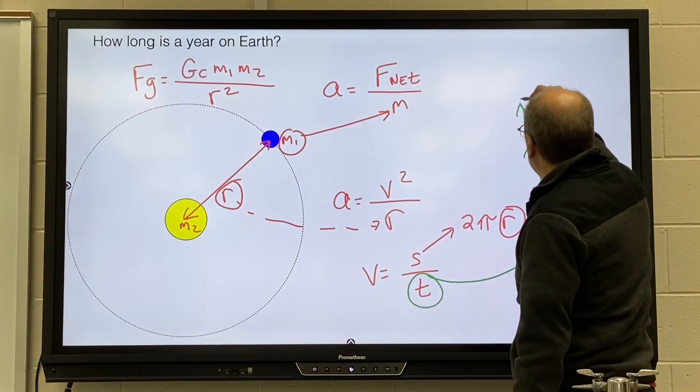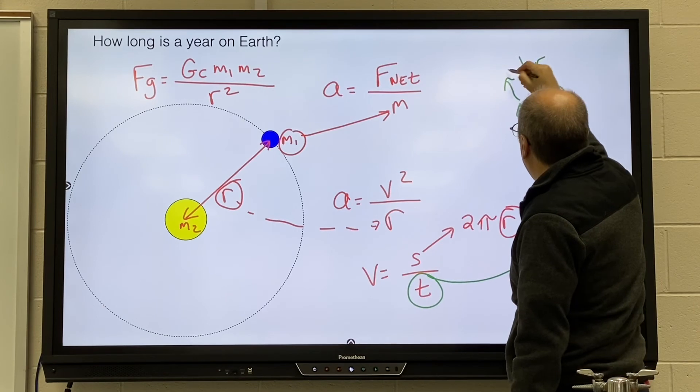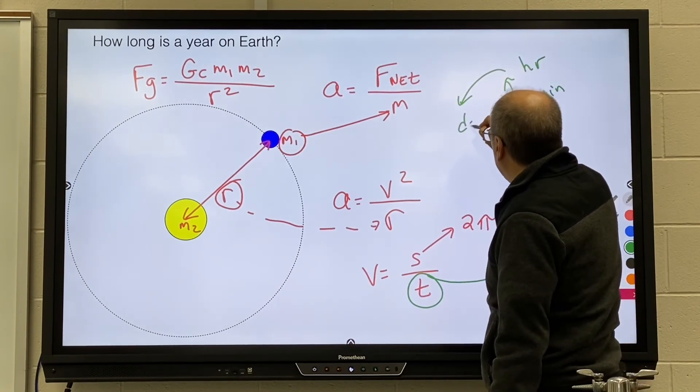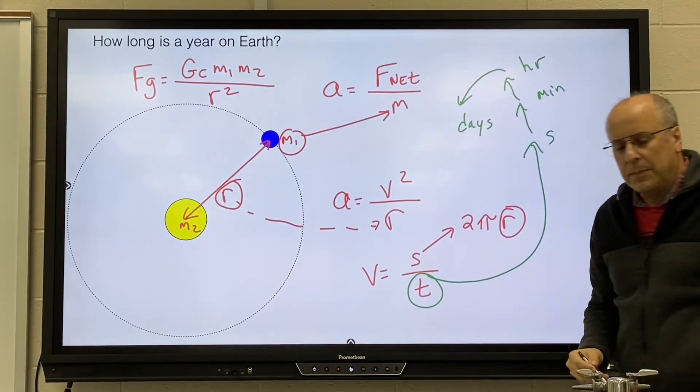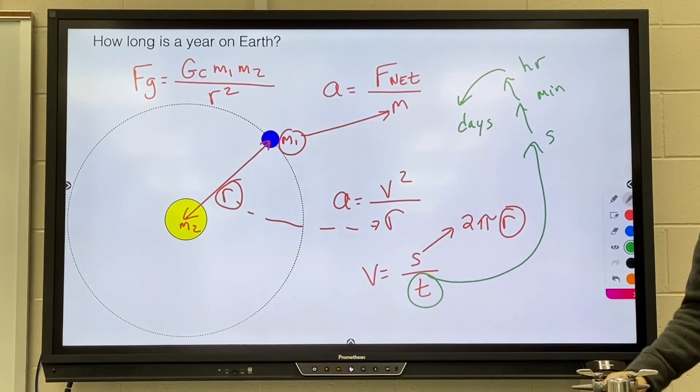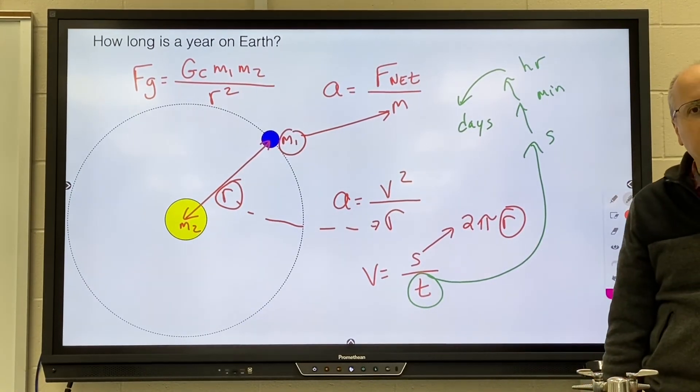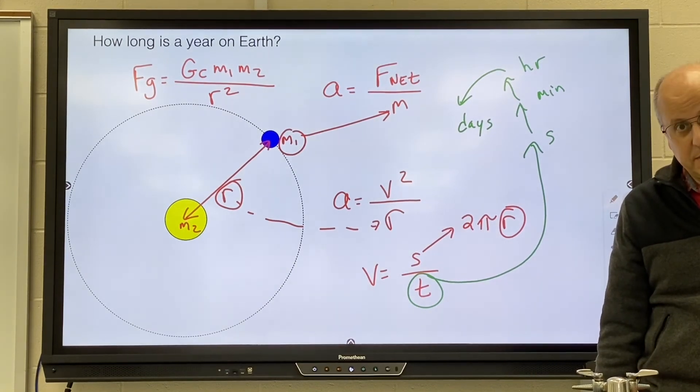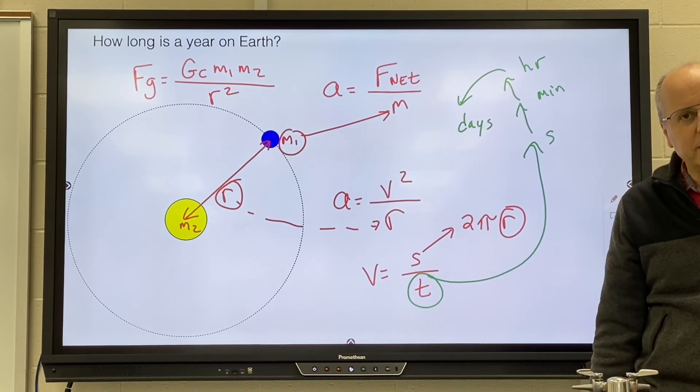Convert it to minutes, convert it to hours, convert it to days. Depending on how many decimal points you carried it out to, you should be very close to getting around 365 days, which we know to be the time it takes the Earth to go around the sun.